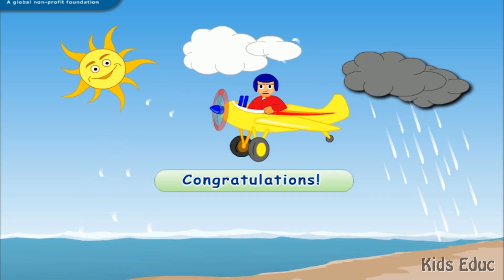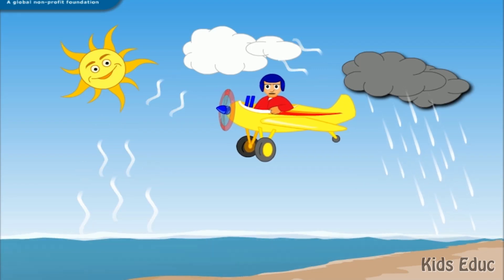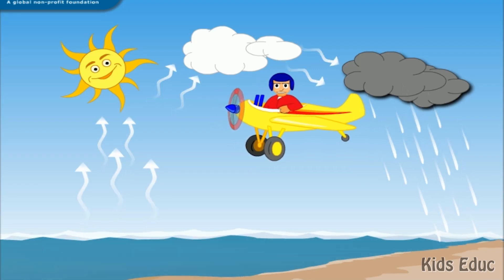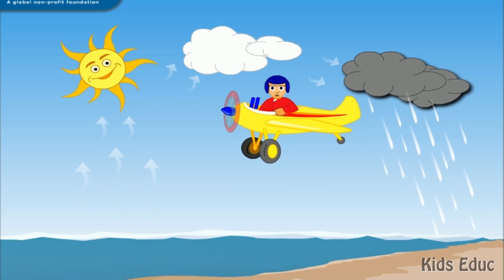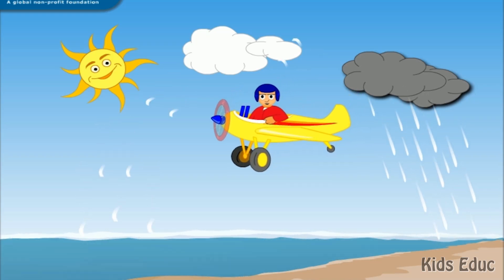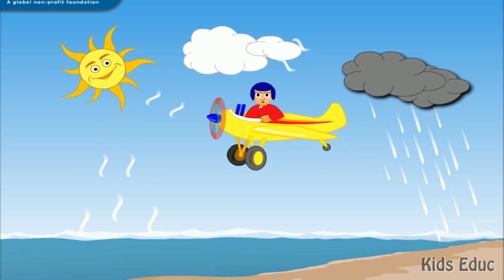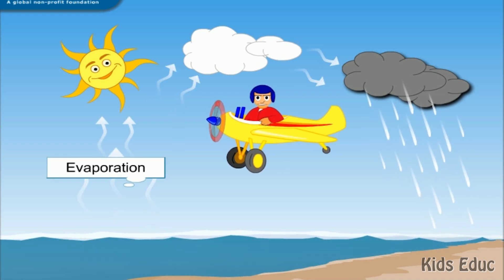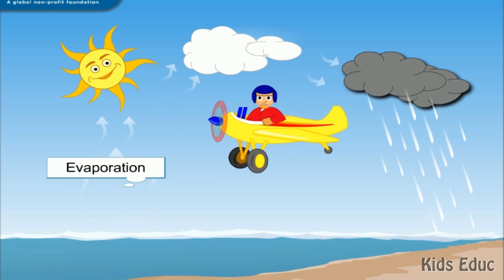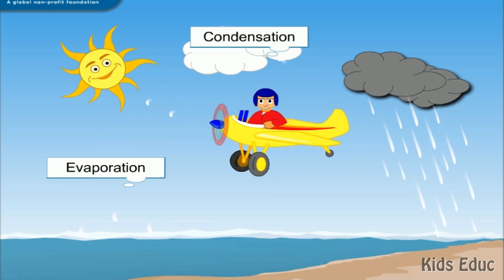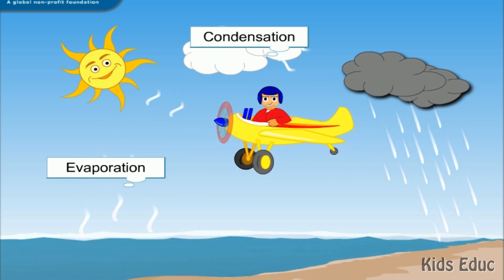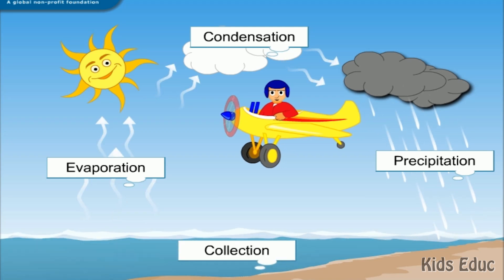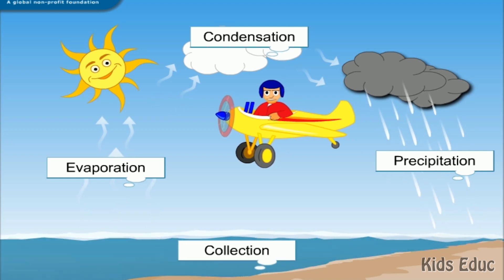Congratulations! You have successfully completed the WaterWise course. You will now be able to identify the four parts of the water cycle: evaporation, condensation, precipitation, and collection.